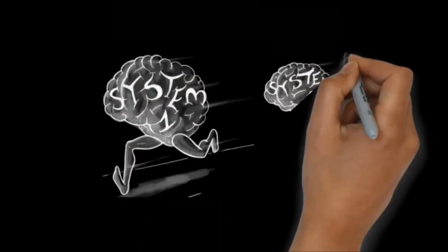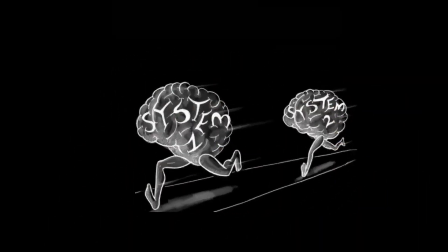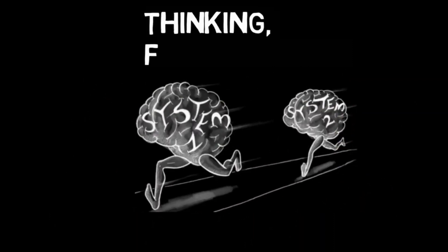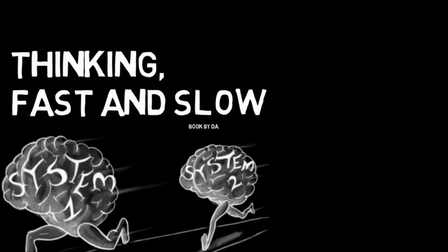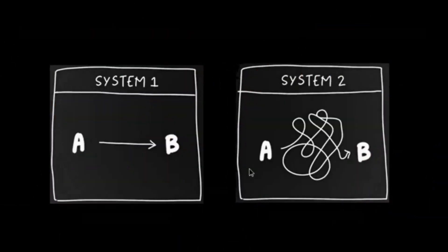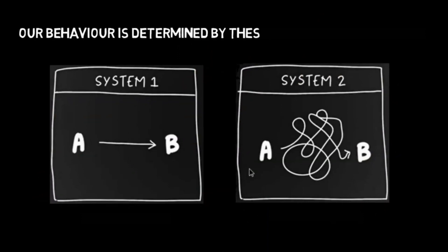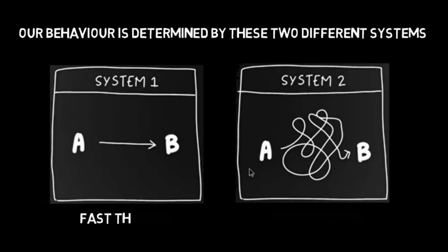Two systems. Psychologists have been intensely interested for several decades in the two modes of thinking evoked by the picture of the angry woman and by the multiplication problem, and have offered many labels for them. I adopt terms originally proposed by the psychologists Keith Stanovich and Richard West, and will refer to two systems in the mind: System 1 and System 2.